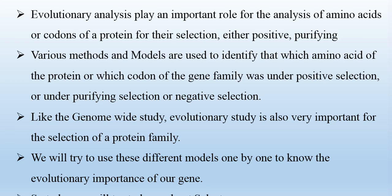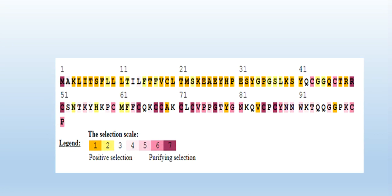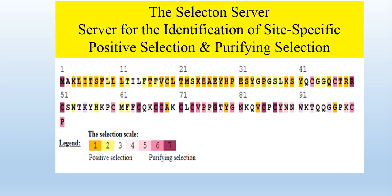So today we will try to learn about Selectons. After doing the Selectons analysis of our gene family, we will get the amino acids in different colors. These colors show different values — from dark yellow to light yellow, then white, and going to light purple to dark purple. This color key shows which amino acid was going through positive selection and which one is going through purifying selection. In this way, we will know how many amino acids of our gene were under positive selection or purifying selection in the evolutionary process, and this will be done through Selectons.